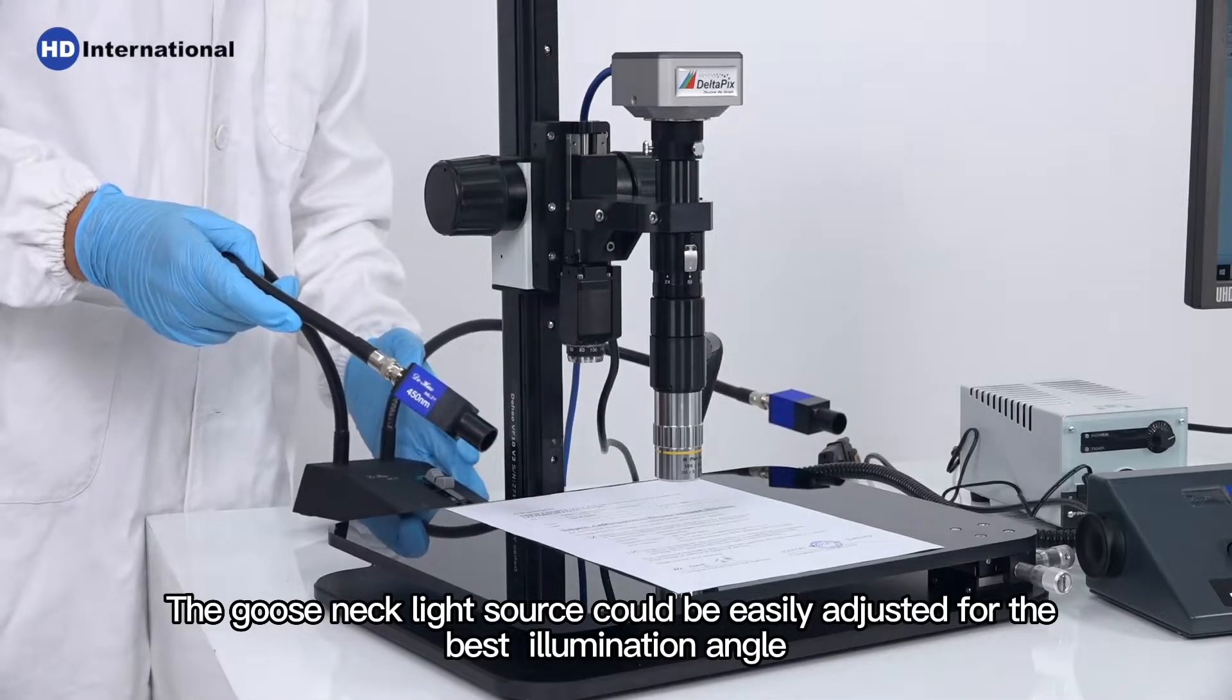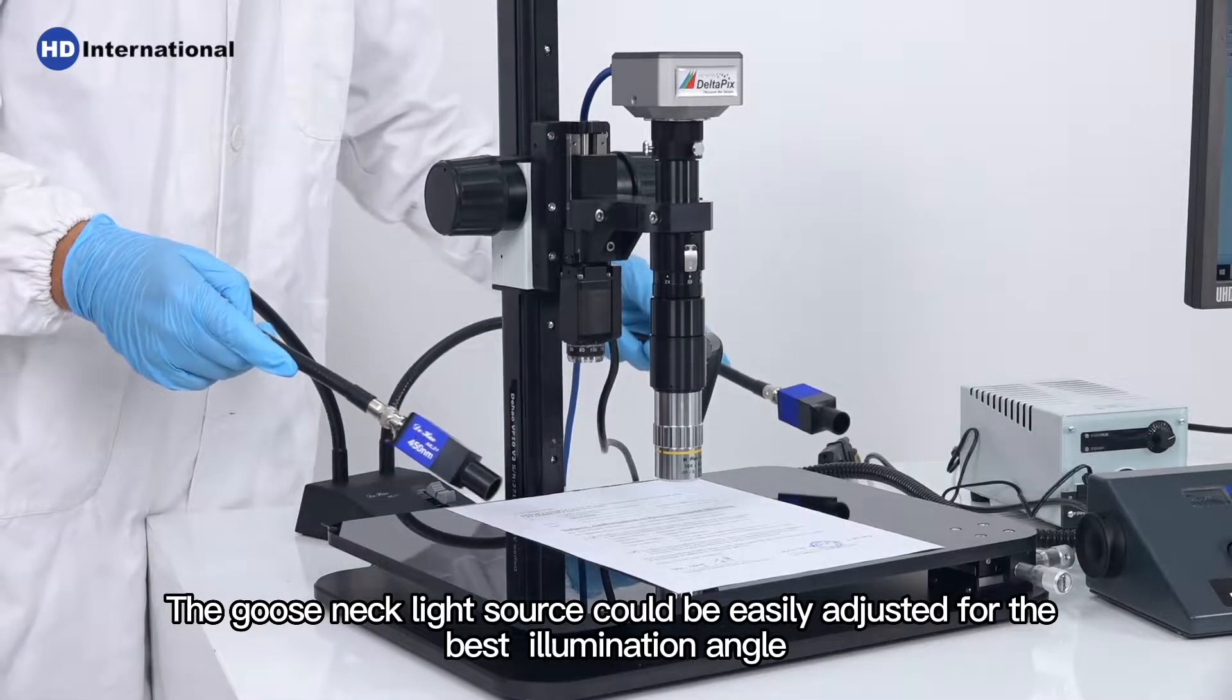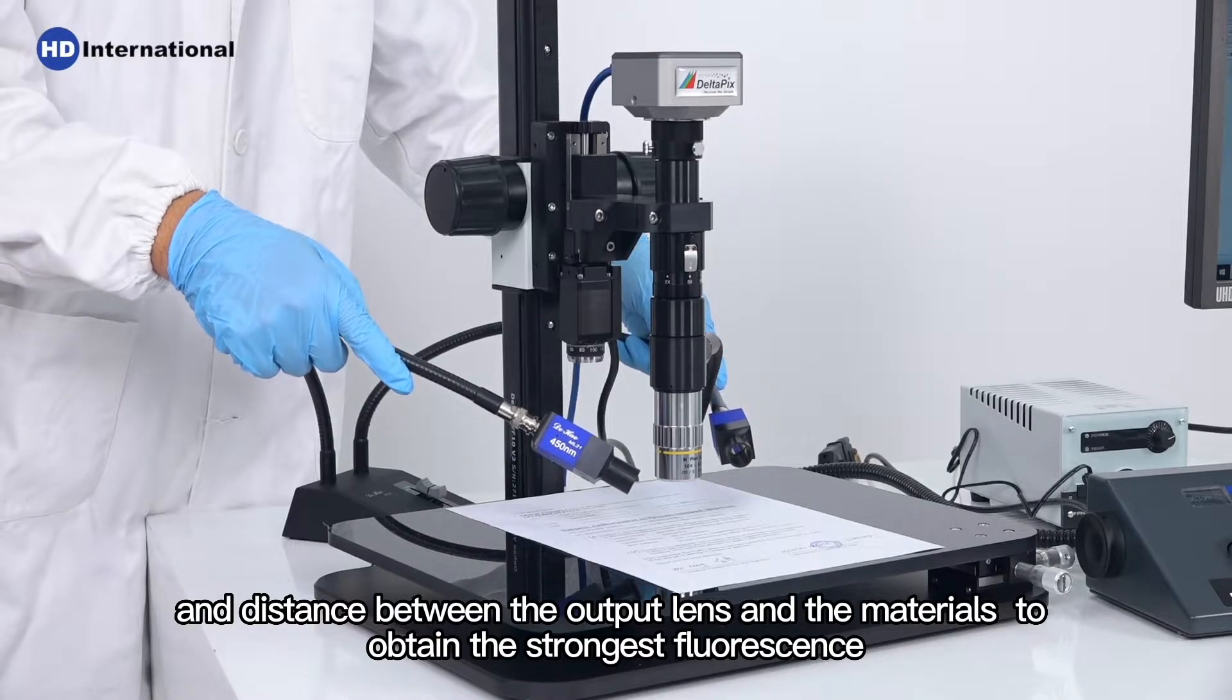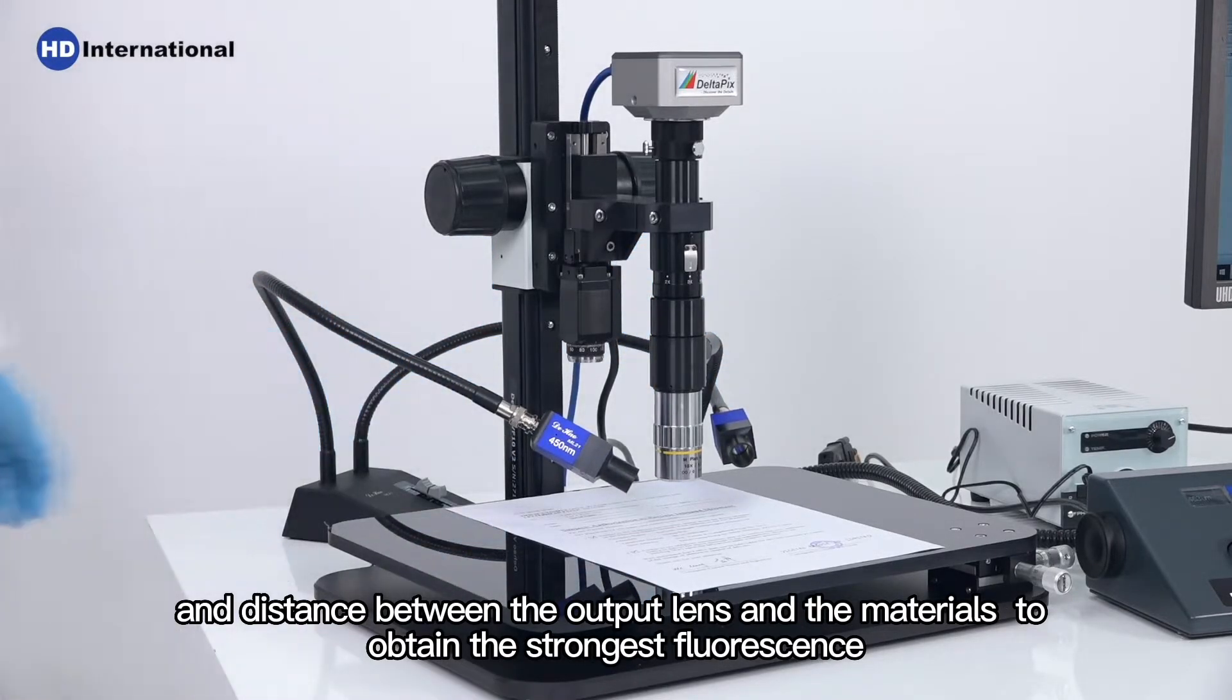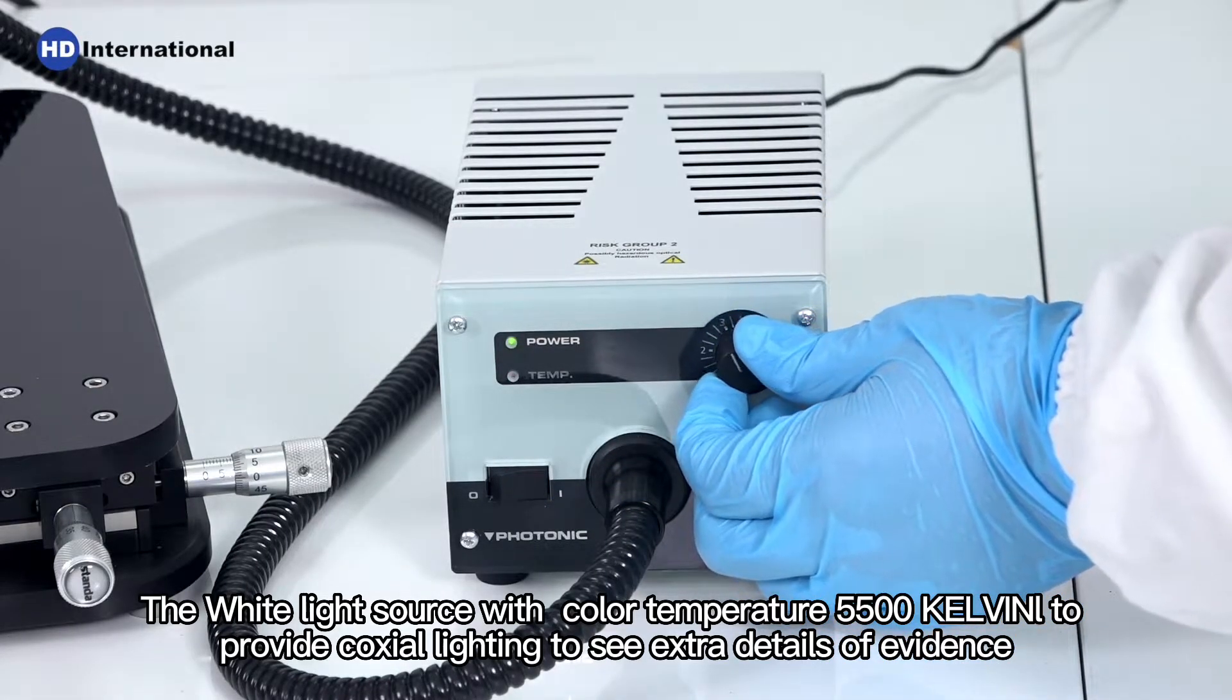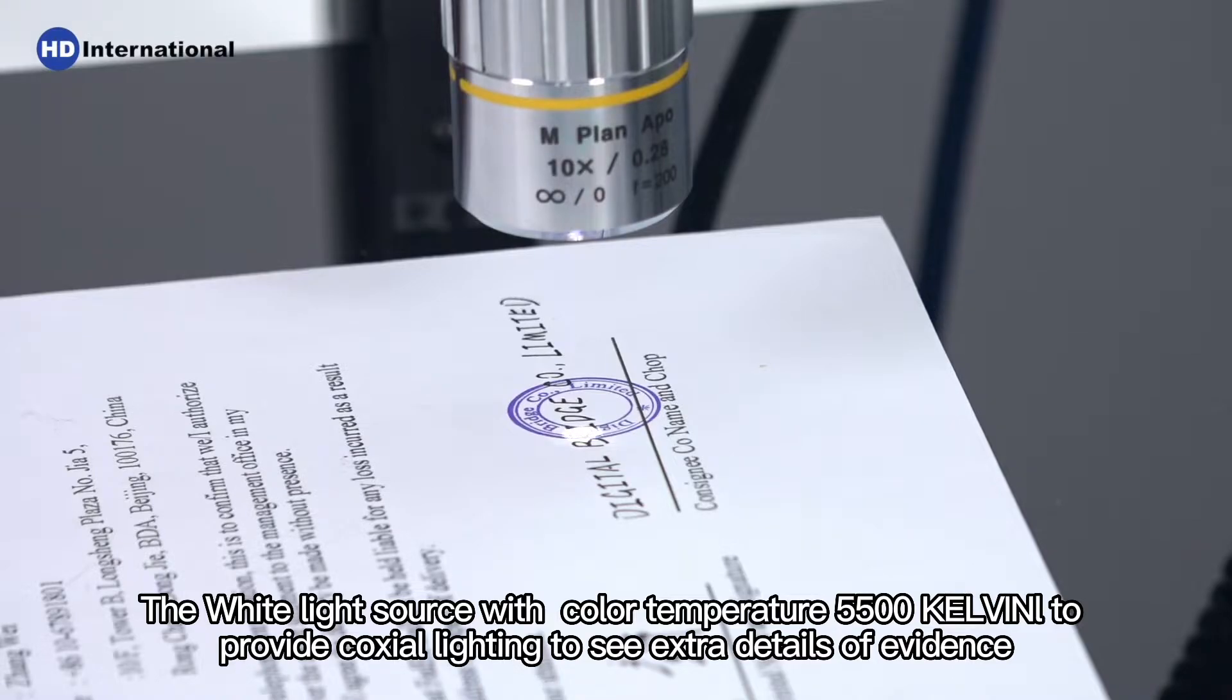The gooseneck light source can be easily adjusted for the best illumination angle and distance between the output lens and the materials to obtain the strongest fluorescence. The white light source with color temperature 5500 Kelvin provides coaxial lighting to see extra details of evidence.